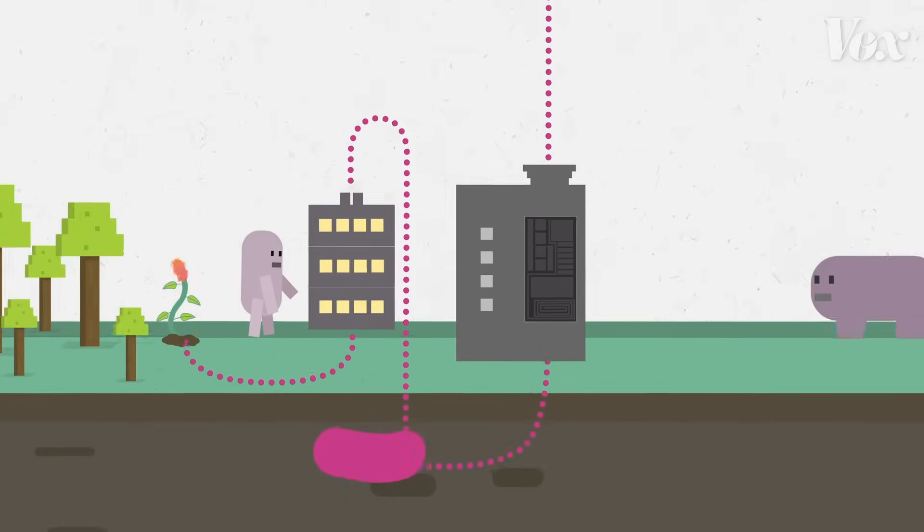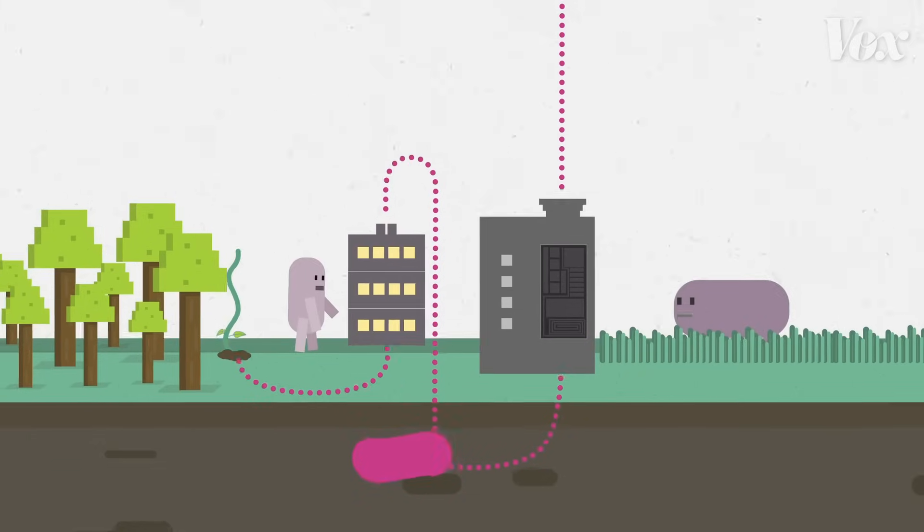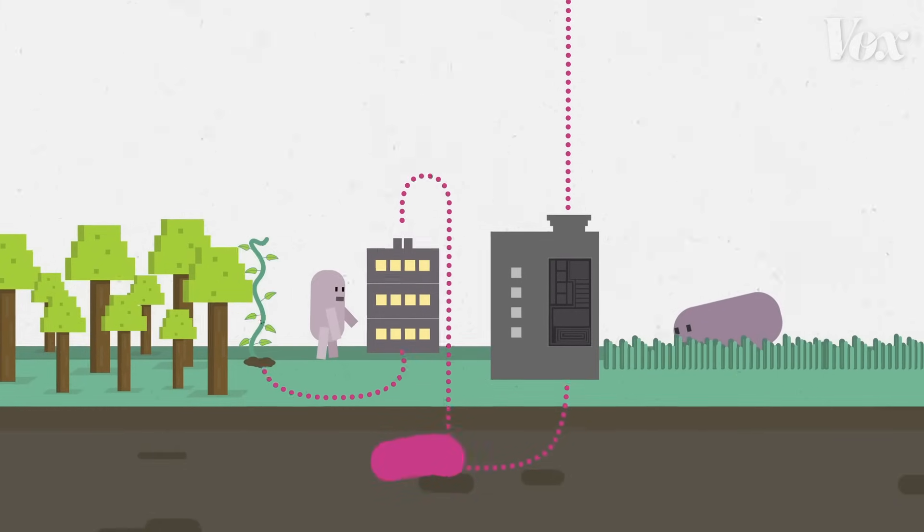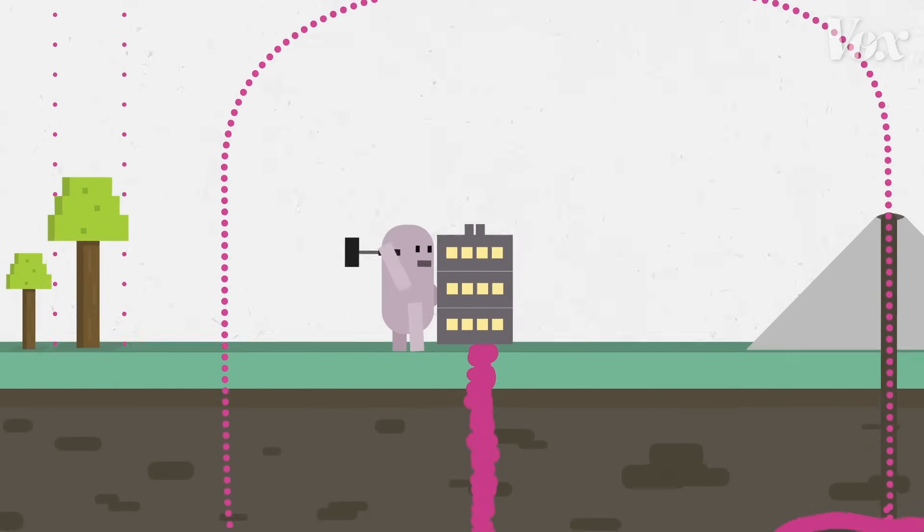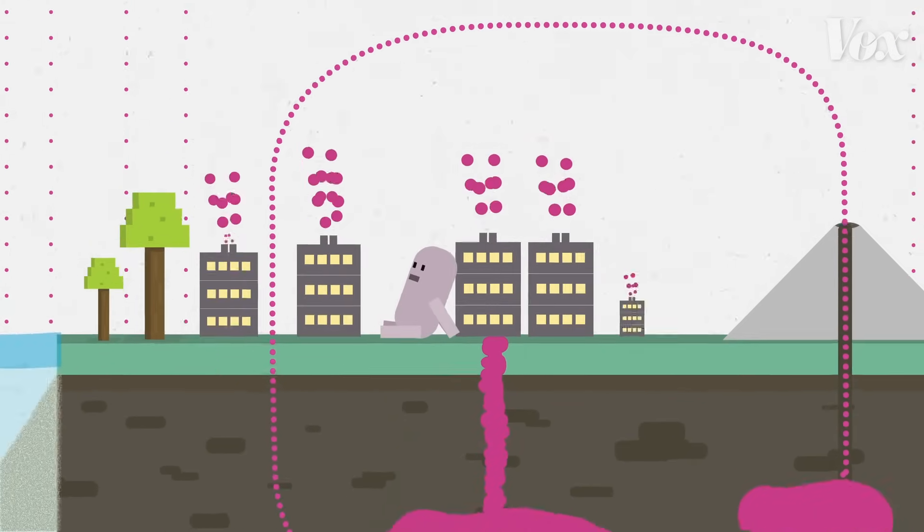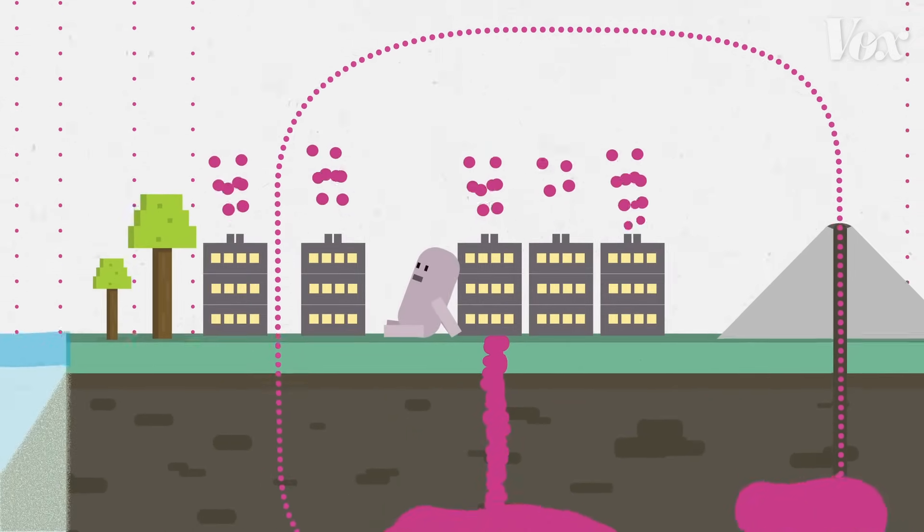There are many ways these animals can tweak the cycle to suck carbon out of the atmosphere. A combination of them is probably the best way forward. But first, these animals need to figure out how to stop putting it there in the first place.